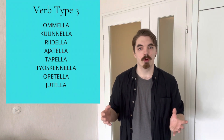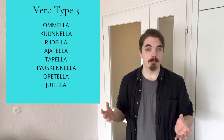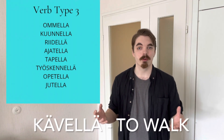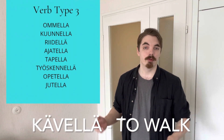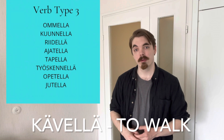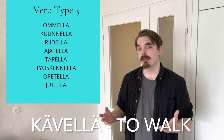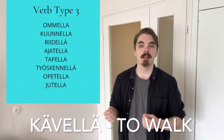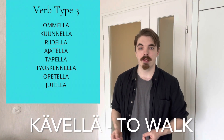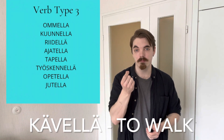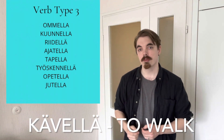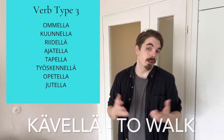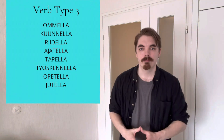Before moving on to type 4, I'll point out one exception to the type 3 rule: the verb KÄVELLÄ, which means to walk. For some reason we don't apply consonant gradation to this verb — it has a weak V which we would normally change to a strong P, but we don't, and it becomes MINÄ KÄVELEN.